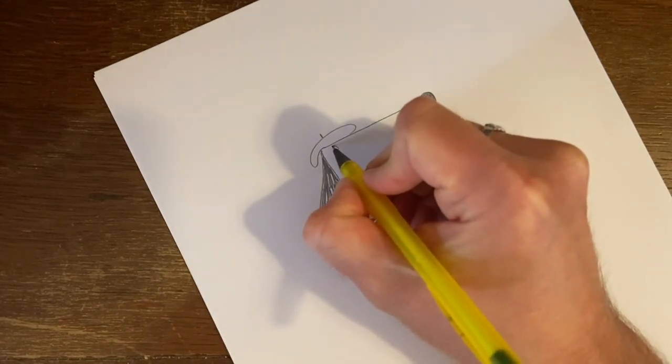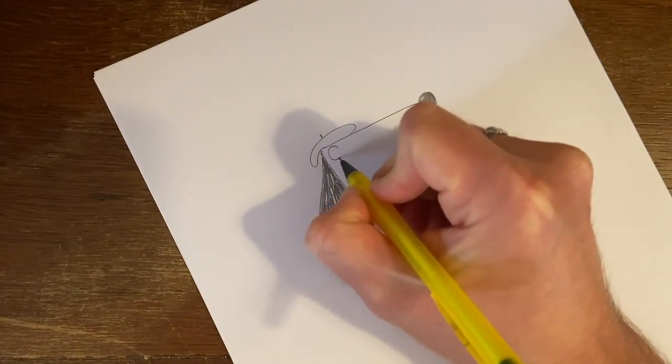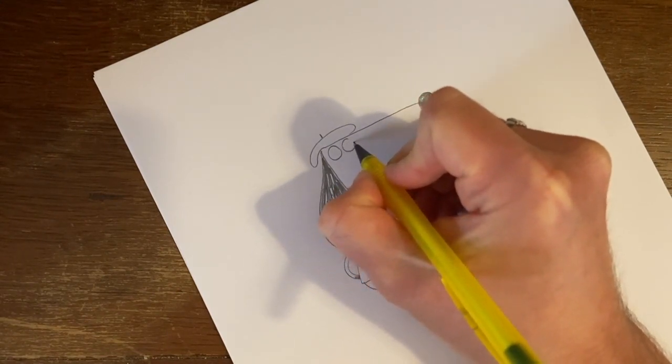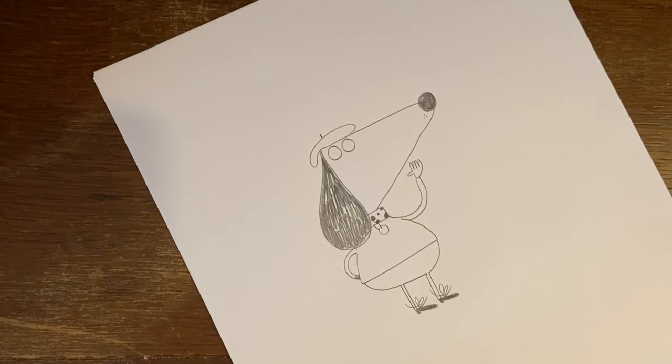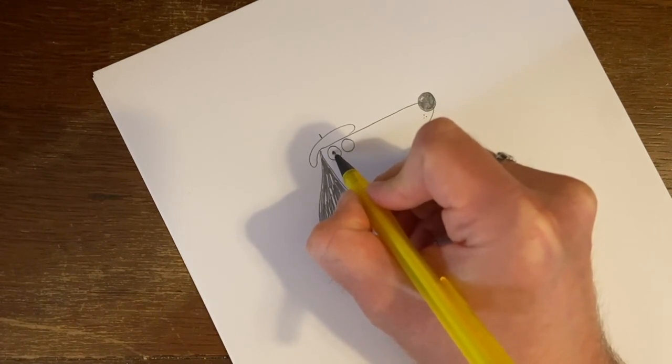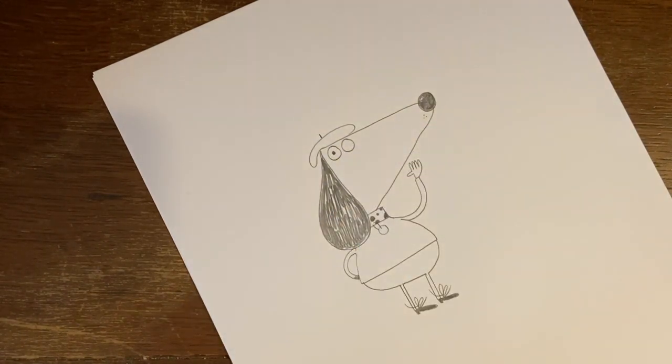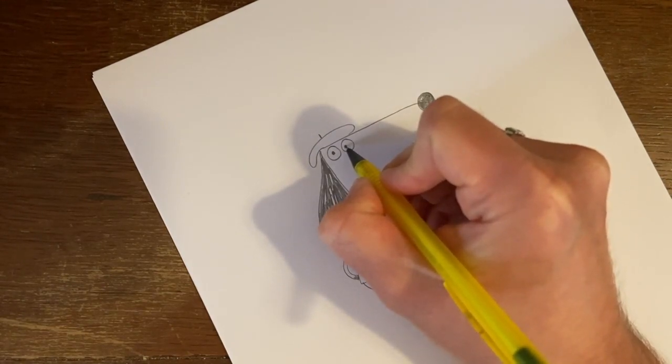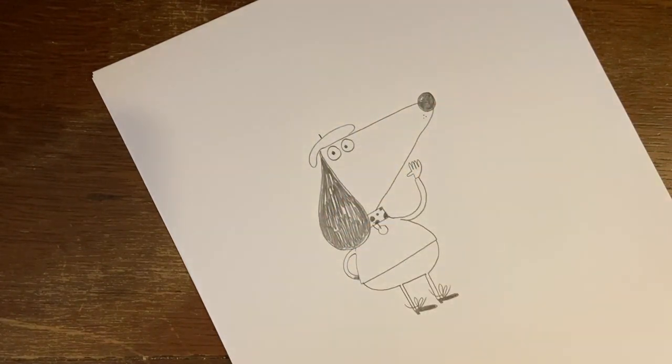Instead, what we're going to do is we're going to draw two big circles like this. One there and one there. And in this one, we are going to draw his pupil, the black circle, right in the middle like that. But in this one, to make him look nice and friendly and not like a zombie, we're going to draw it slightly over to one side. Do you see how I've done that there?